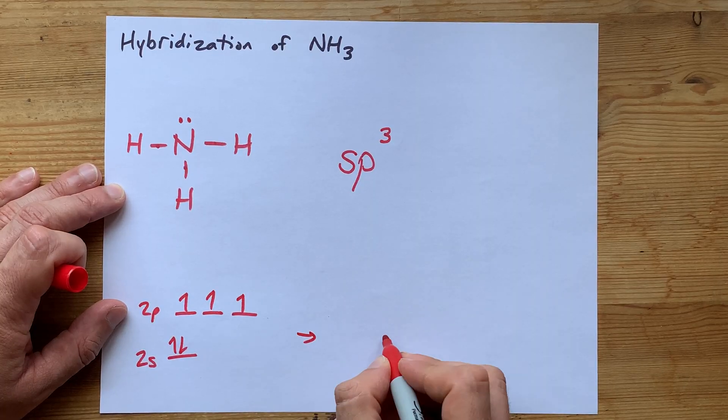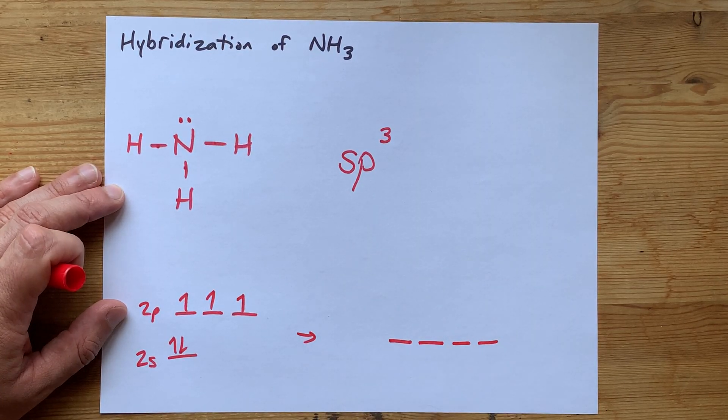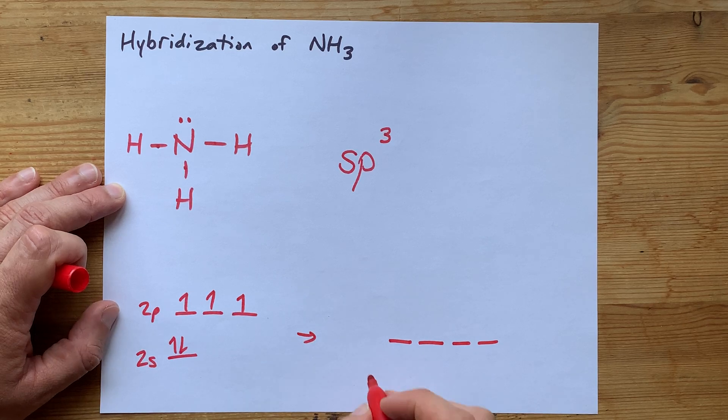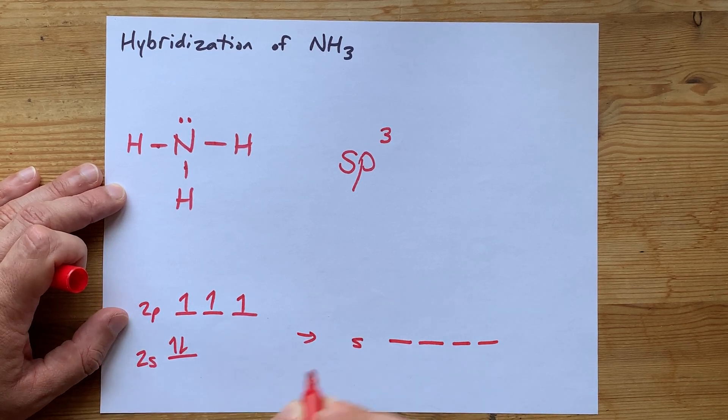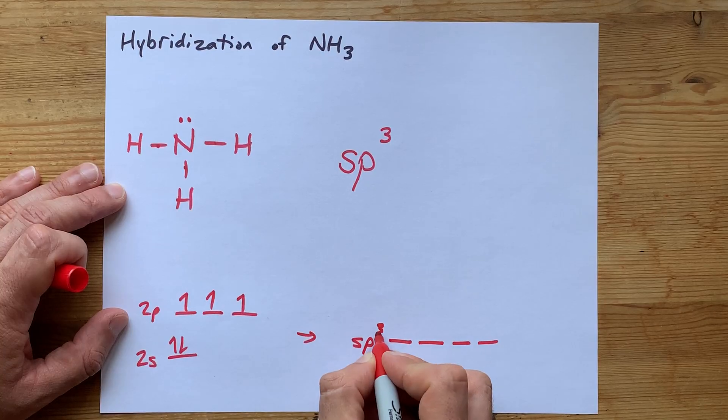and then they combine to make four hybridized orbitals. We call it S for the S, and P3 for the 1, 2, 3 of the Ps,